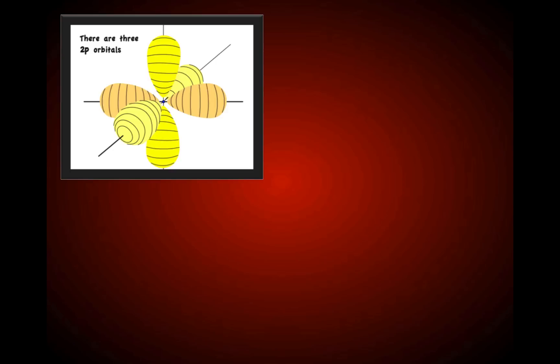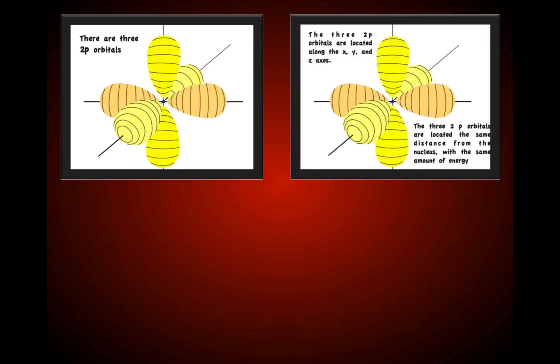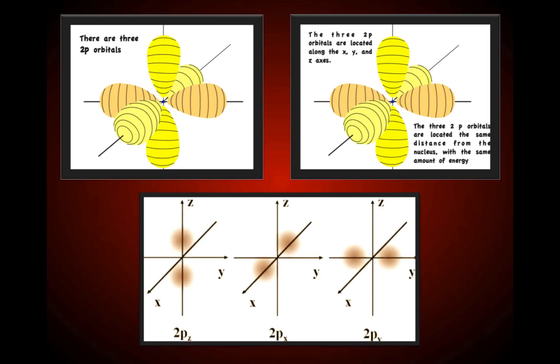There are three 2P orbitals. The three 2P orbitals are located along the X, Y, and Z axes, all the same distance from the nucleus with the same amount of energy. Notice the shape of a P orbital — they have the shape of a dumbbell. It doesn't matter if it's 2P, 3P, or 4P; all P orbitals have a dumbbell shape.